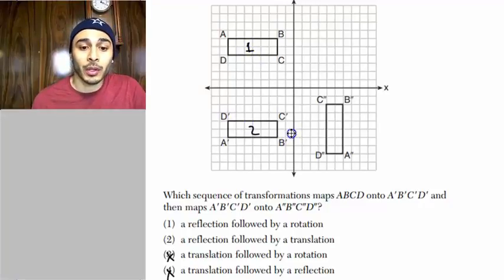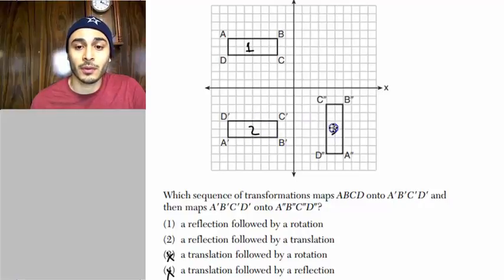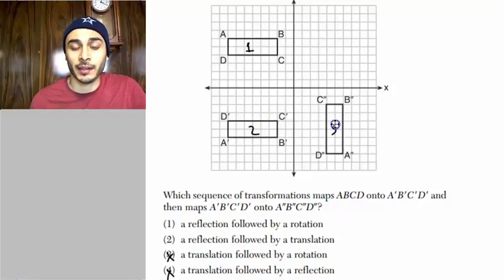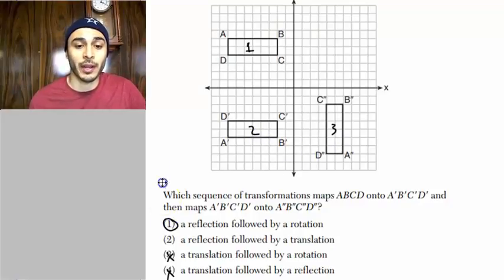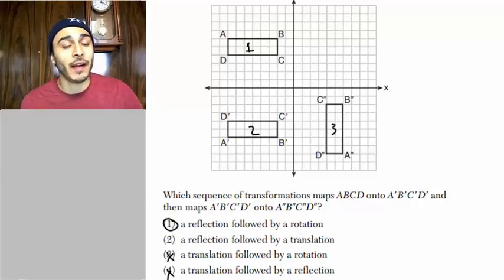And then now, to go from this image to this image, a rotation must take place. We can see that this figure was rotated to get to this point. It was not merely a translation. A rotation must take place to go from here to here. So then the answer is choice one, a reflection followed by a rotation.